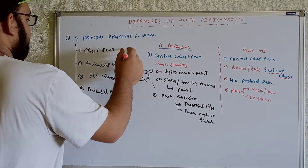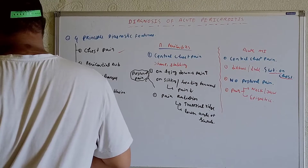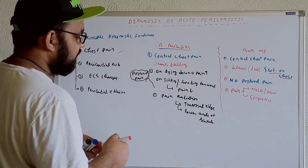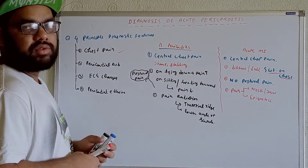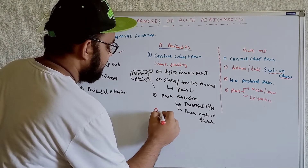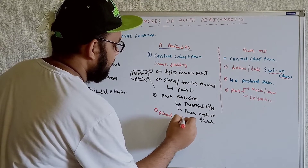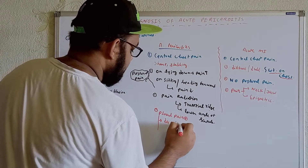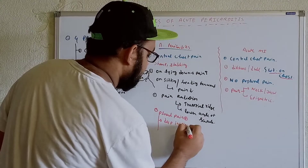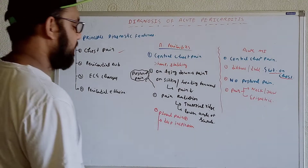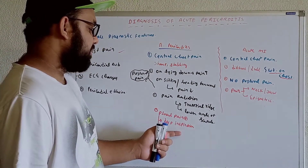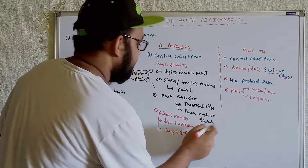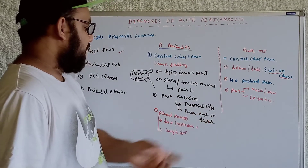In acute pericarditis, inflammatory chemical mediators can reach from the pericardium to the pleural regions. So we can also get pleural pain. This pleural pain increases during deep inspiration, and it also increases on coughing. This is pericarditis-induced pleural pain. In acute MI, we do not get this pleural pain.